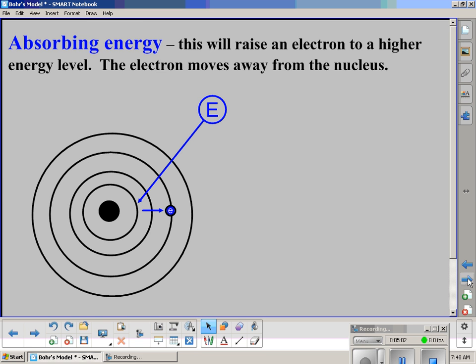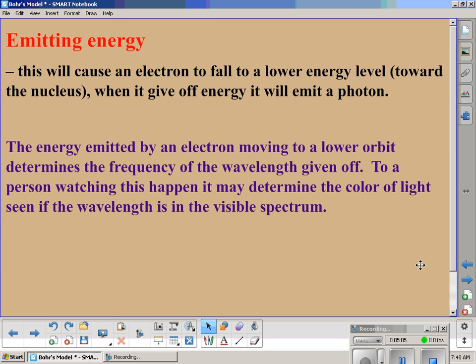Emitting energy will cause an electron to fall to a lower energy level toward the nucleus. When it gives off energy, it will emit a photon—a little packet of energy. The energy emitted by an electron moving to a lower orbit determines the frequency of the wavelength given off and might determine the color of light seen if the wavelength is in the visible spectrum. Of course, the visible portion of the electromagnetic spectrum is very small, so there are many photons given off that we can't see with our eyes, but they're still giving off energy.